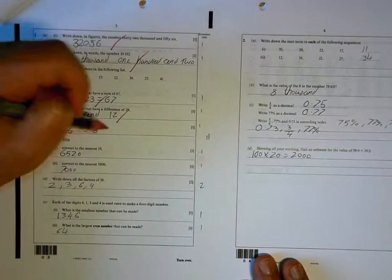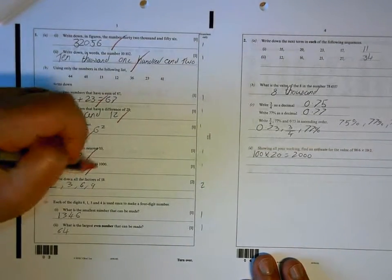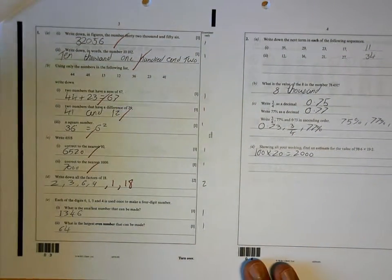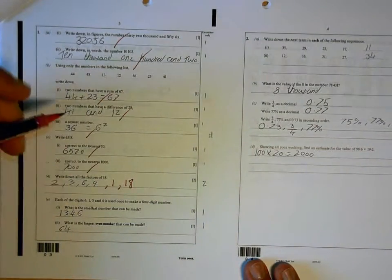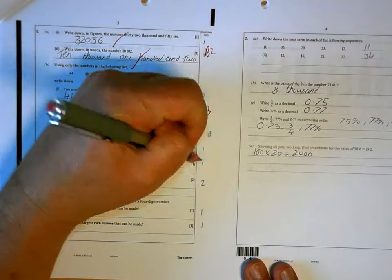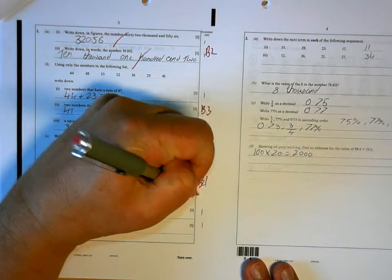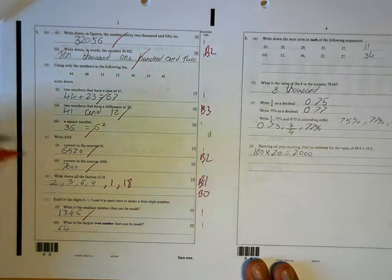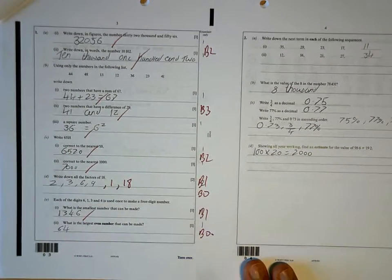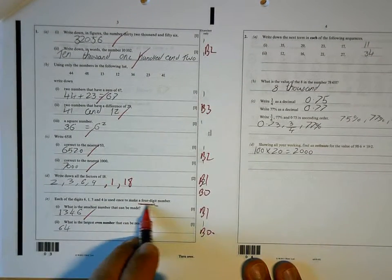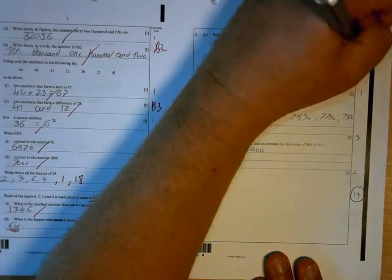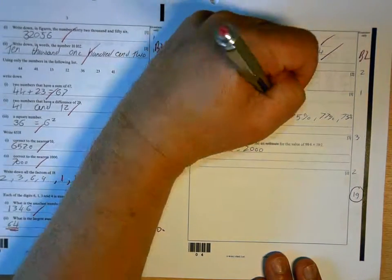So, 44 and 23, 41 and 12, 36. Right, you've missed out here, 1 and 18. So you're not going to get those two marks, you're only going to get one of them.